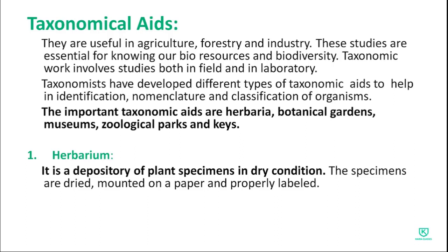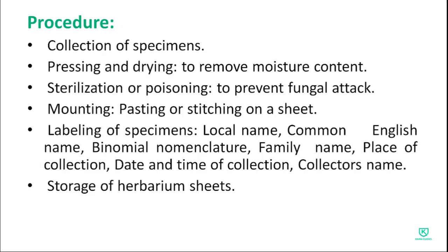The first taxonomic aid is herbarium. A herbarium is a depository of plant specimens in dry condition. The specimens are dried, mounted on paper, and properly labeled. The procedure for making a herbarium: first, collection of specimens (root, stem, leaf, flower); second, pressing and drying to remove moisture content; third, sterilization and poisoning to prevent fungal attack; fourth, mounting — pasting or stitching the specimen on a sheet.